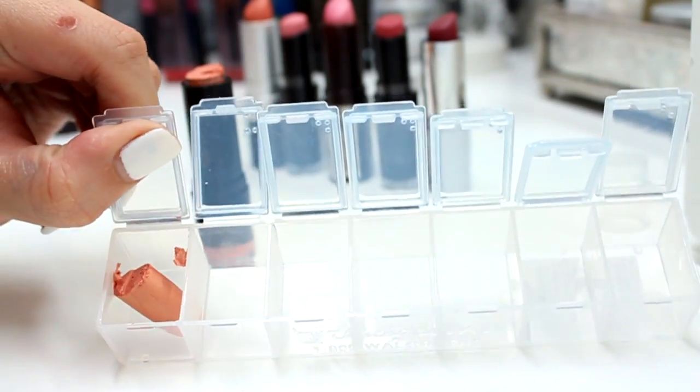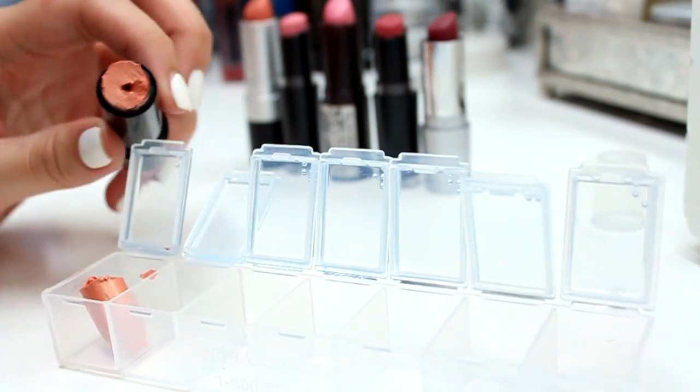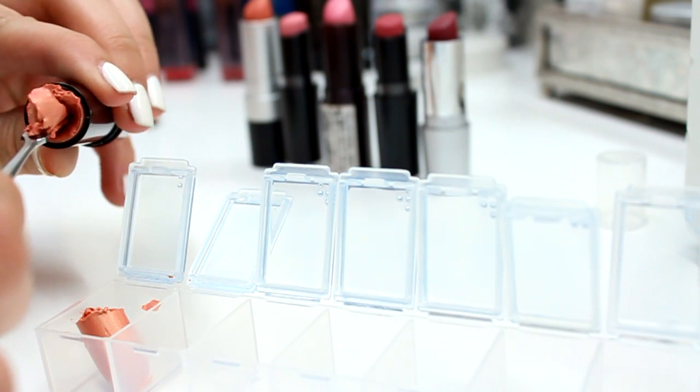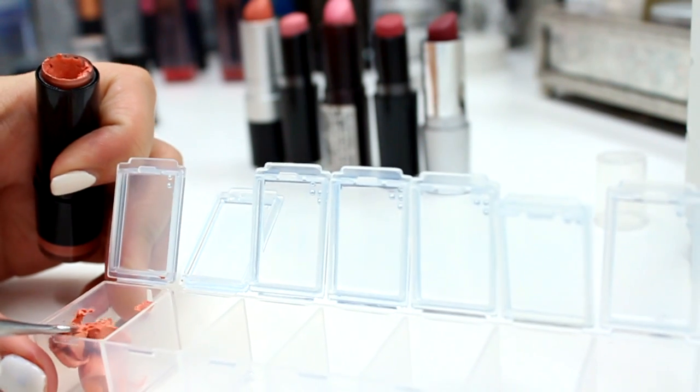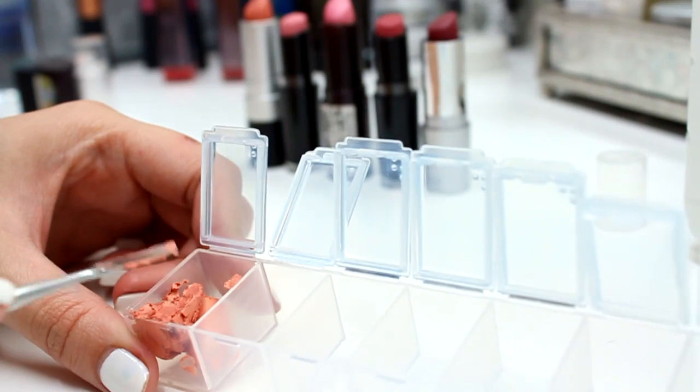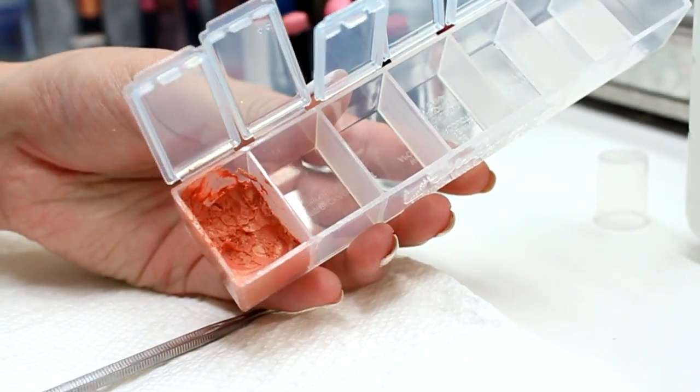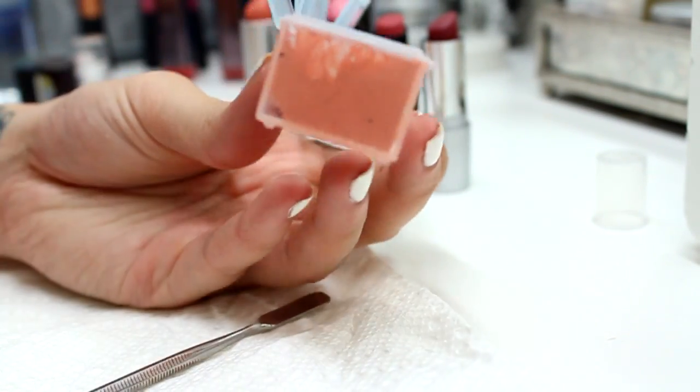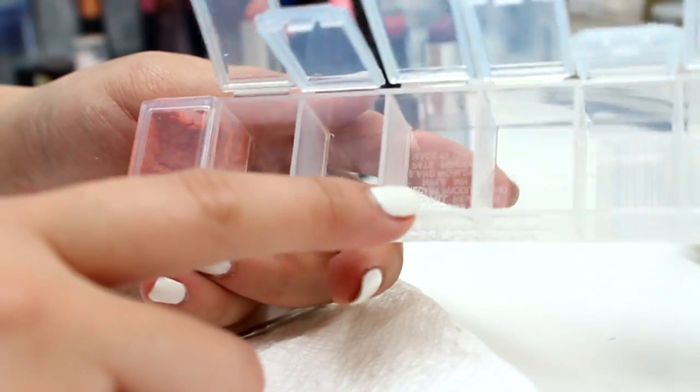Now that you have the lipstick inside, you're going to take whatever is remaining and scoop it out. Now using either your spatula or your finger, you can just go ahead and mash it in there. Okay, so there you have the very first lipstick—you just need to close it up. And that's it, so I'm going to finish the rest and I'll be right back.